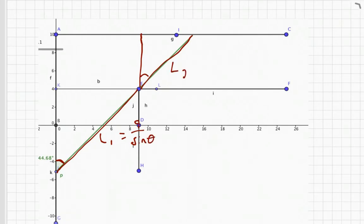The equation for L2 is 6 over cos theta. The total length of the pole is then L1 plus L2.